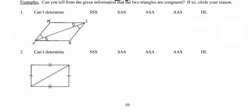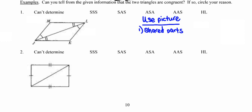There are, however, some important pieces of information we are going to use the picture to find. One is reflexive property — we can look at shared segments and shared angles. It's easier to show in a picture: a shared segment must have the same measure in both triangles, making those segments congruent. The second item we'll use the picture for is vertical angles. Any vertical angles you see in the picture, you can always state they're congruent because vertical angles are always congruent to each other.